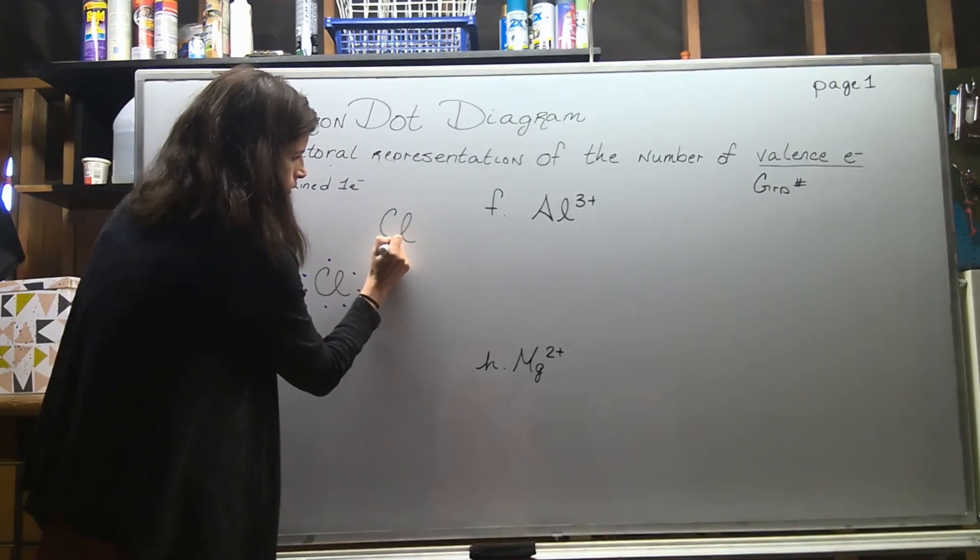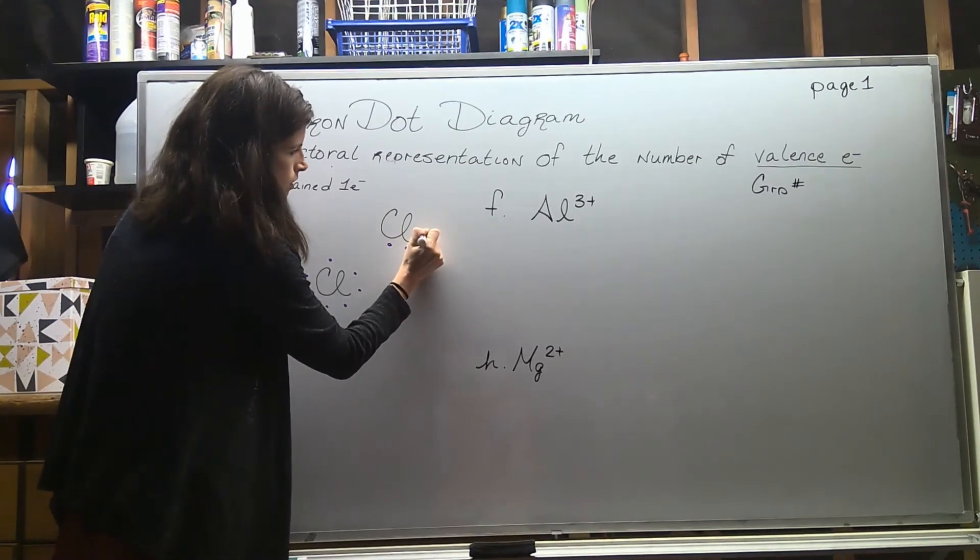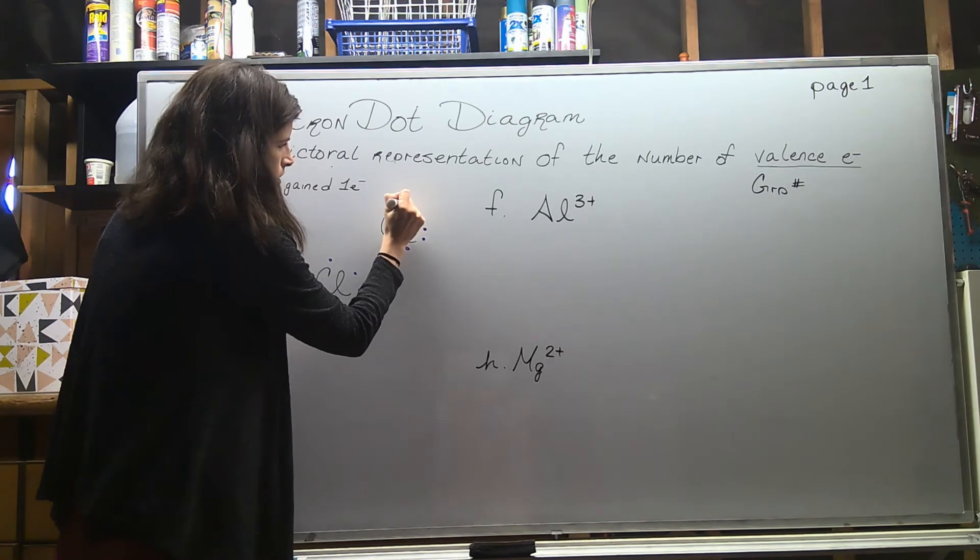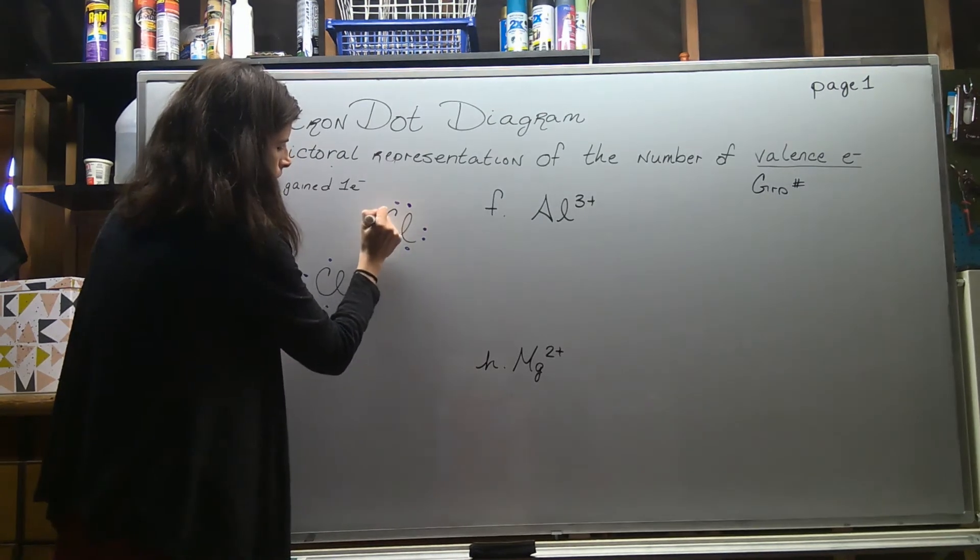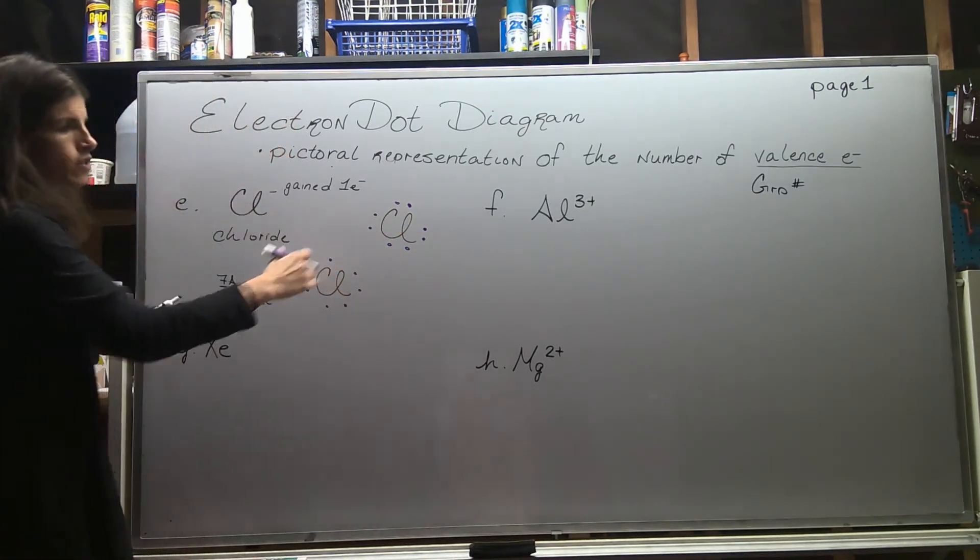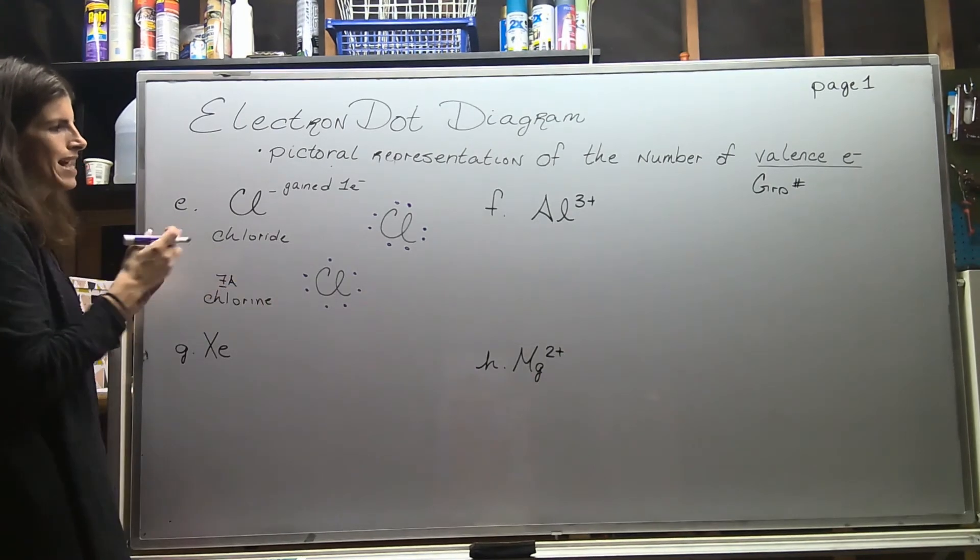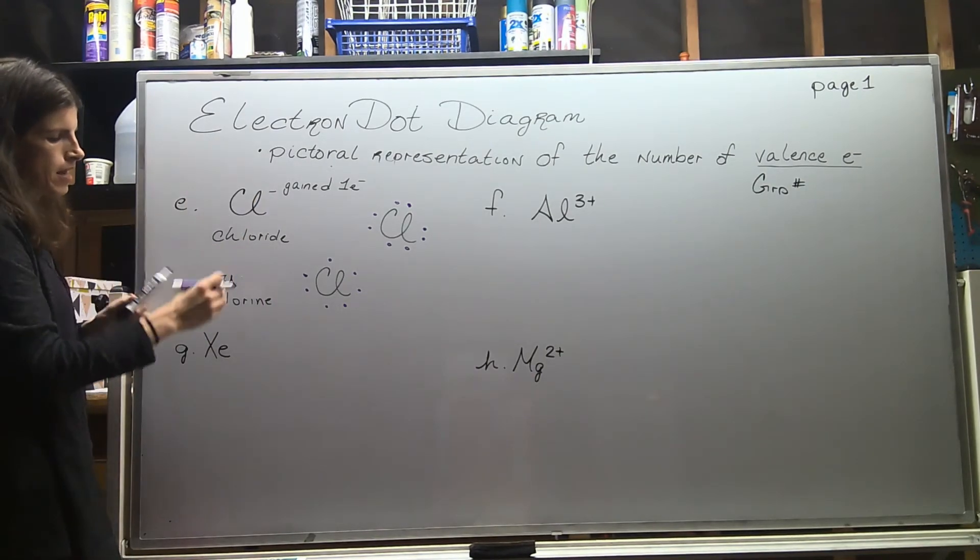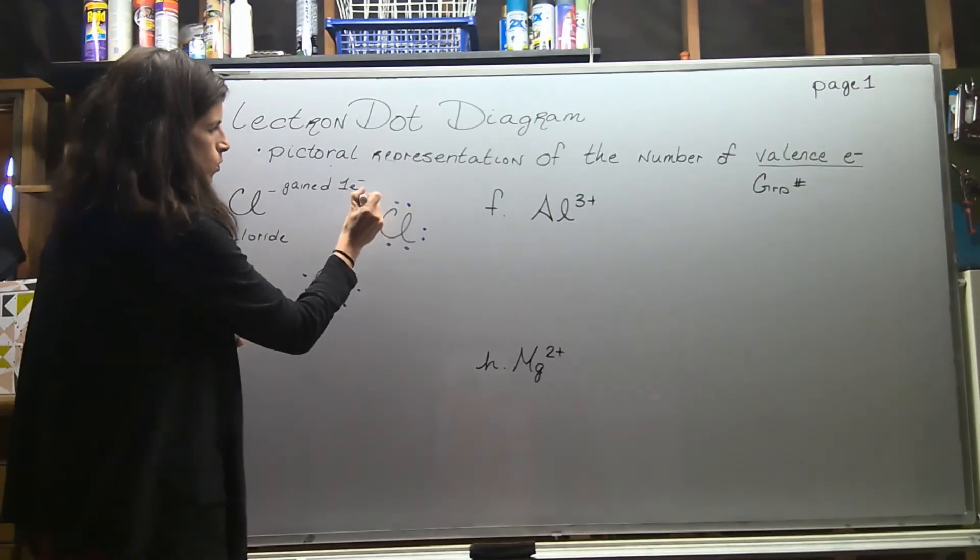These look too similar, so the way we're going to designate between an ion and a neutral species is by drawing square brackets and then you're going to put the charge on the outside there.